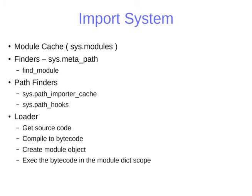The first three steps are all about finding a loader. Once the loader object is available, you load the module into your namespace. The loader goes back, finds where the source code is — a .py file in your file system — compiles that into bytecode, creates a module object, and executes the bytecode in that module dict scope. That gives you a module object which is then available for you to work with.